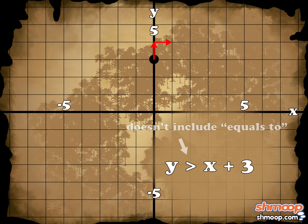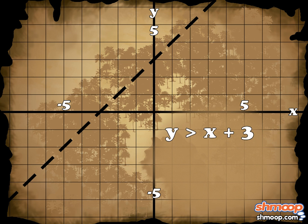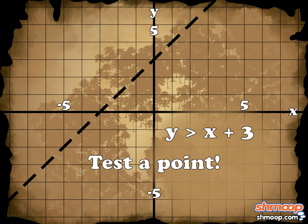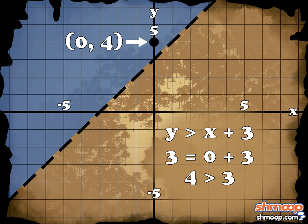Since the inequality doesn't include equals, we know the line will be dotted and not solid. To see which side of the line we should shade for the inequality, we can test a point on one side of the line — for example, 0 comma 4. If we plug in 0 for x, we get that 0 plus 3 is 3. Since our point's y-value of 4 is greater than 3, we know that we can shade the upper half of the line.